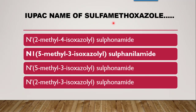According to IUPAC, sulfamethoxazole contains methyl (meth) and isoxazole rings. The isoxazole heterocycle is attached to the sulfanilamide moiety at the N1 position, at the third position of isoxazole, and there is a methyl group at the fifth position of the isoxazole ring. The correct answer is N1-(5-methyl-3-isoxazolyl)sulfanilamide.